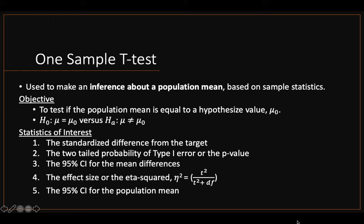So the statistics of interest is the standardized difference from the target, which is your t-square, the two-tail probability of type 1 error or the p-value itself, the 95% confidence interval for the mean differences, effect size if you want to calculate it, that's the formula, and the 95% confidence interval for the population mean.